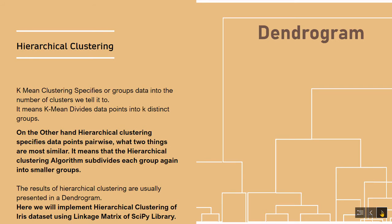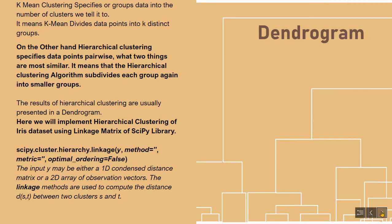Hierarchical clustering, on the other hand, specifies data points pairwise — determining which two things are most similar. The hierarchical clustering algorithm subdivides each group again into smaller groups, and the results are usually presented in a dendrogram.